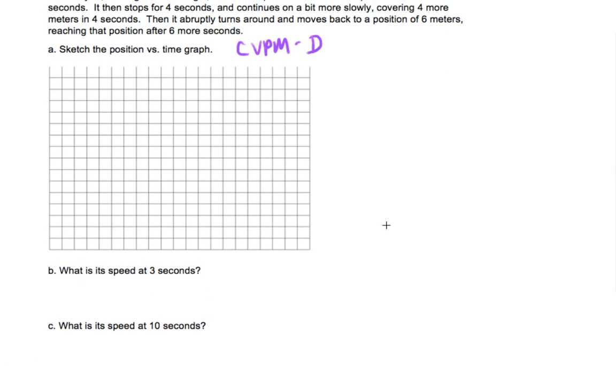What's its speed at 3 seconds? Well, you're going to need to get the slope, which you're going to get by calculating and reading it off the graph. So you're going to need to calculate, and you're probably going to need to read it off the graph as well. And the same is true with Part C.